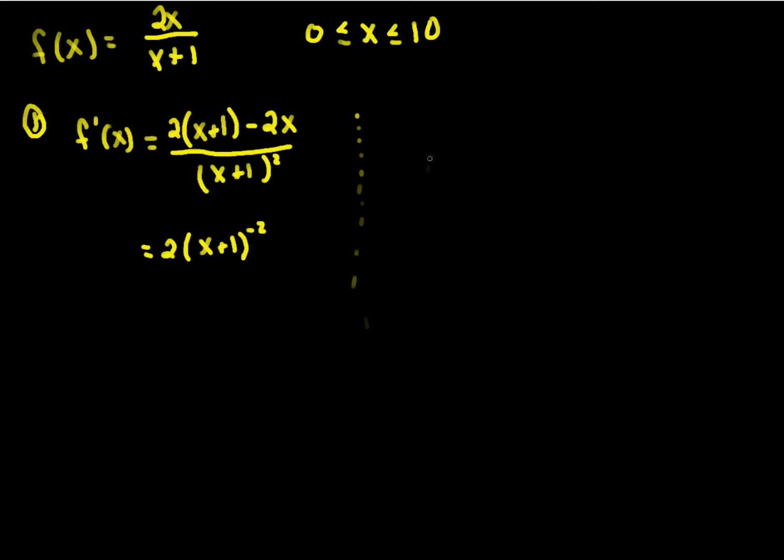And this is going to be much nicer to take its second derivative. So f double prime of x, we can simply use chain rule here. The derivative using power rule, the negative 2 comes down, so I get a negative 4. The derivative of the inside is 1, so that doesn't change anything. And then it's x plus 1 to the minus 3. So there's our first derivative and second derivative.